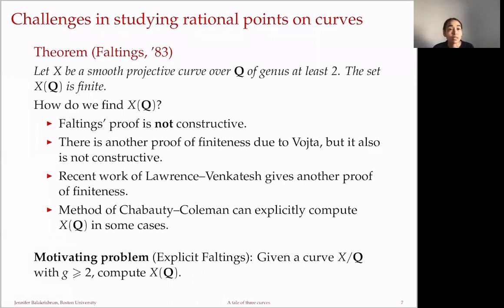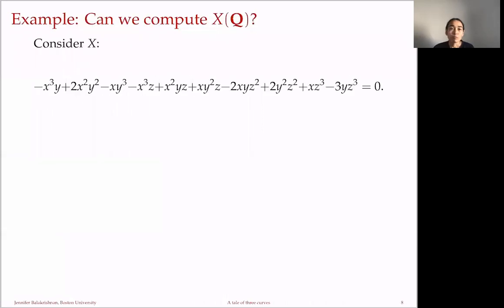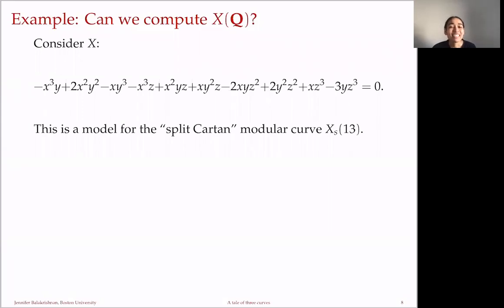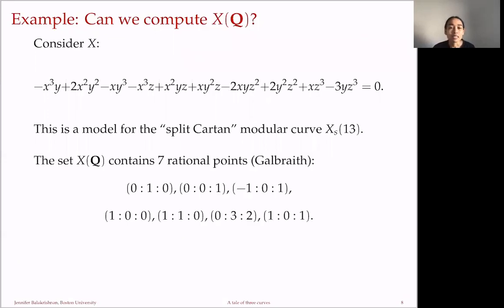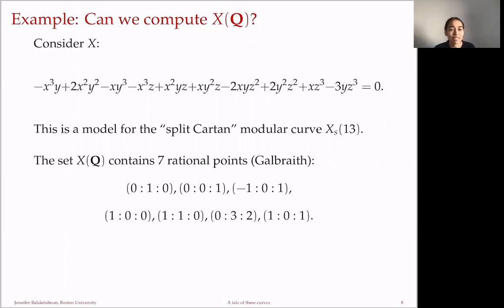Here is one more curve—a smooth plane quartic with reasonably nice coefficients. It's not random: this is the split Cartan modular curve of level 13, and there are interesting consequences for knowing its rational points from the question of Serre. Galbraith did some searching and found seven rational points. This raises the natural question of whether those seven points are precisely the complete set of rational points, or whether there are more just beyond the range he considered. We'll answer this at the very end.